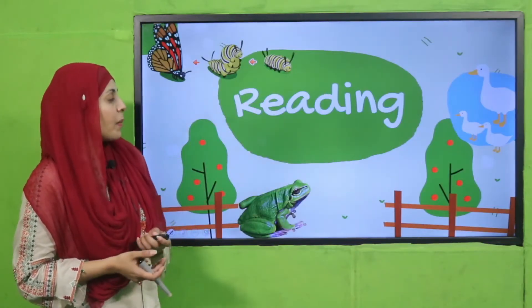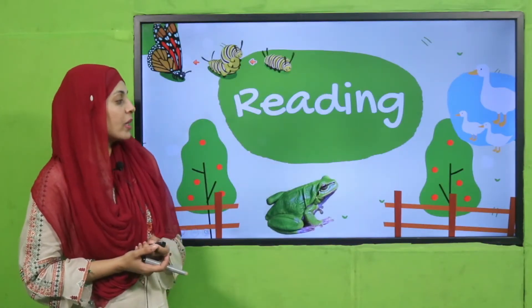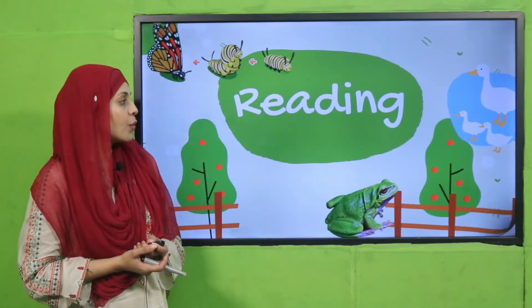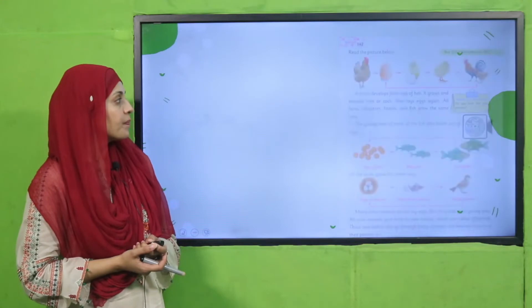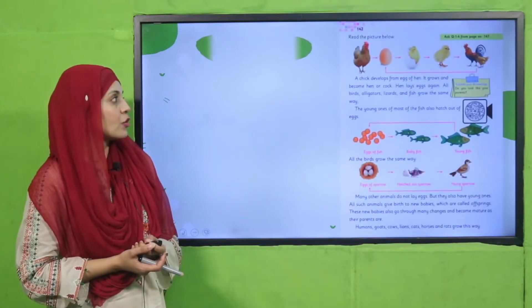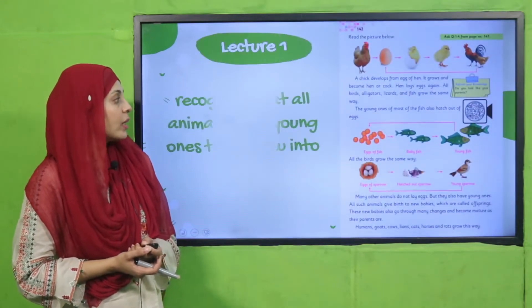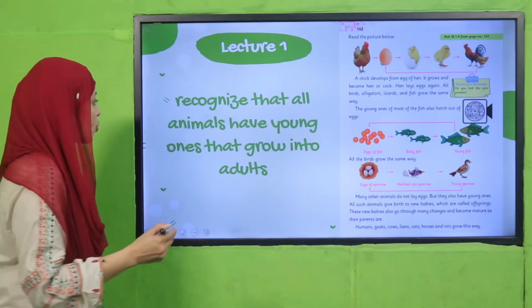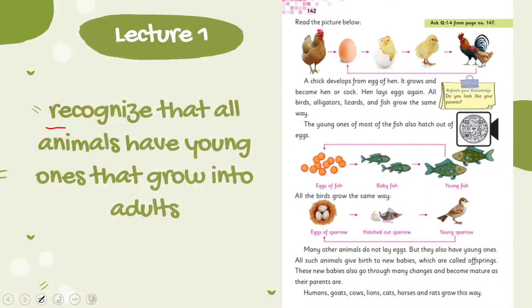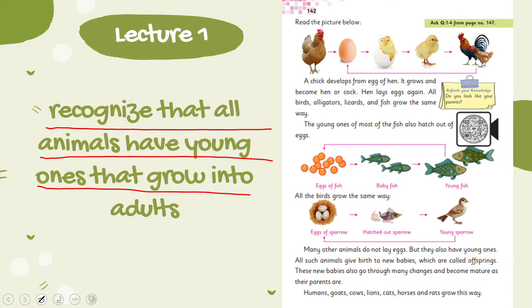My dear students, let's quickly move forward towards lecture number one. In lecture number one, the students will be able to recognize that all animals have young ones that grow into adults.